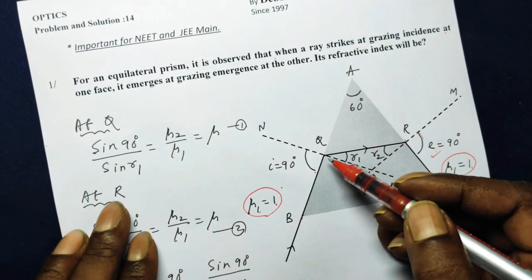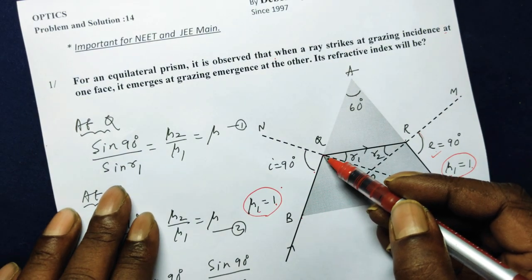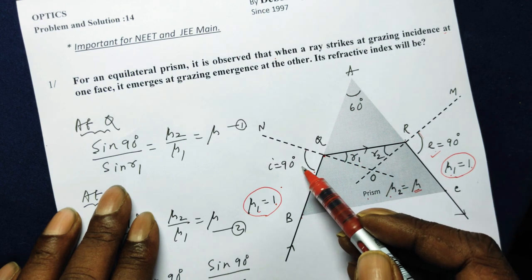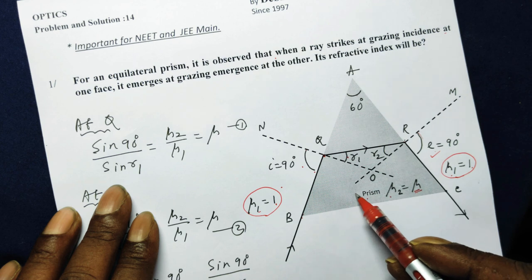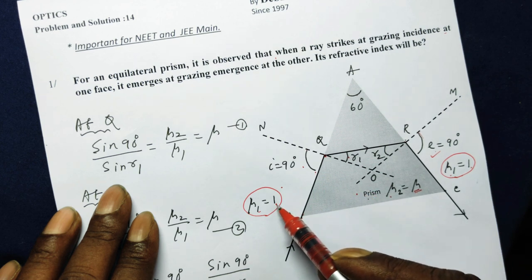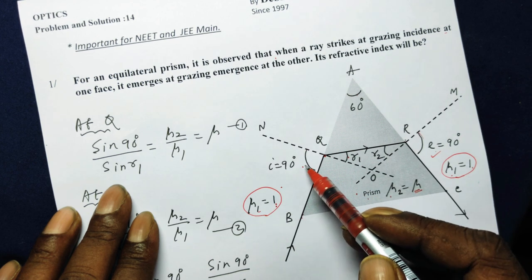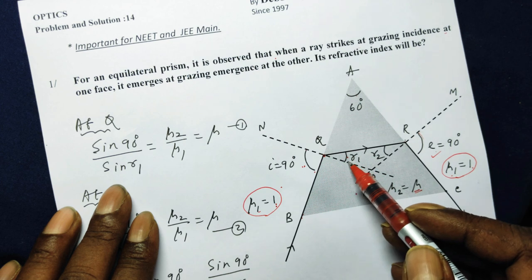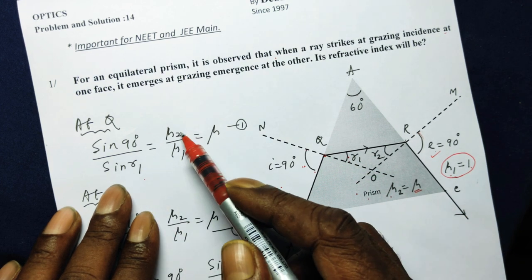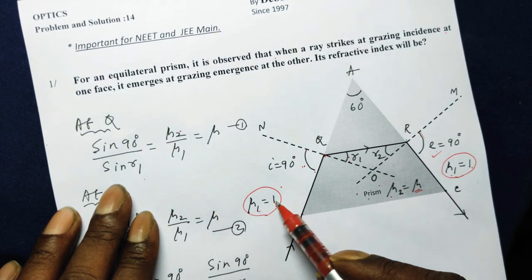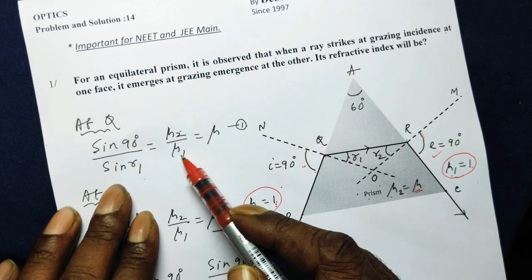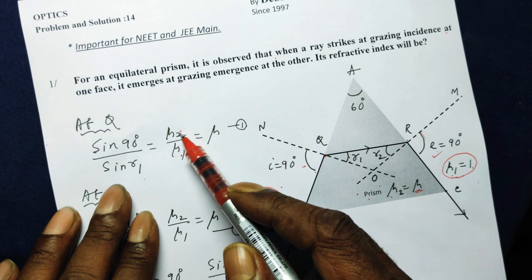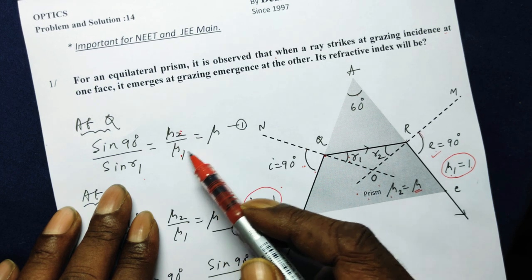So here, if you apply the Snell's law, sin of this angle over sin of this angle will be mu of this medium divided by mu of this medium. So sin 90 over sin R1 is equal to mu2 over mu1. Since mu1 is taken as 1 being air or vacuum, and mu2 is mu, so mu over 1 is equal to mu.